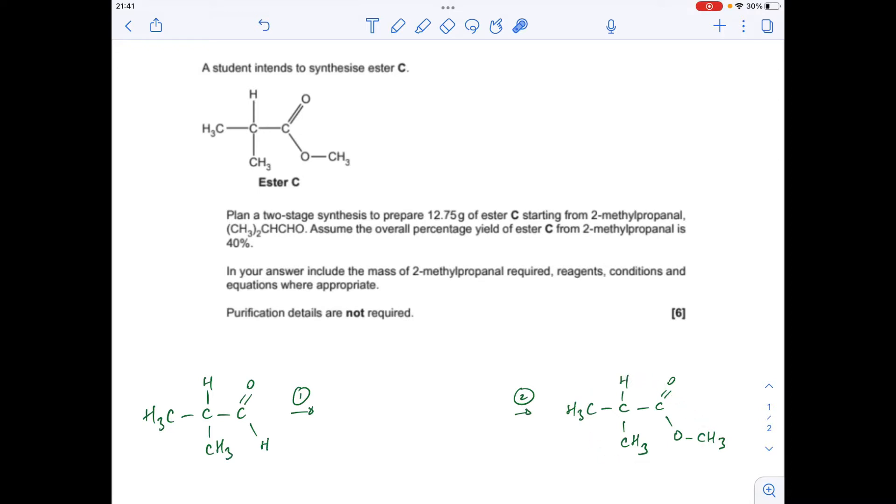We're going to have to turn this aldehyde group here into a carboxylic acid group, which we can then react with an alcohol and turn it into this ester. So the intermediate compound, the product of step 1, is going to be the carboxylic acid version of the aldehyde.